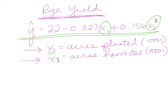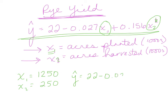Let's go ahead and do predictions. Say we've got a farmer who has planted 1,250 acres — which in thousands is 1,250 — and harvested 250,000 acres. I want to predict the rye yield. According to the formula, the rye yield — what we call y-hat — is: 22 minus, so in your calculator you hit 22 minus 0.027 times 1,250.